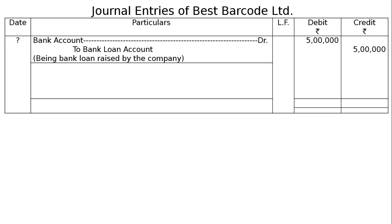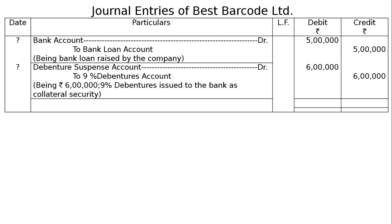Then the journal entry for giving collateral security: debenture suspense account debited to 9% debentures account, that is Rs. 6 lakh in the debit as well as credit, being Rs. 6 lakh 9% debentures issued to the bank as collateral security. The total will be Rs. 11 lakh in the debit column as well as in the credit column.